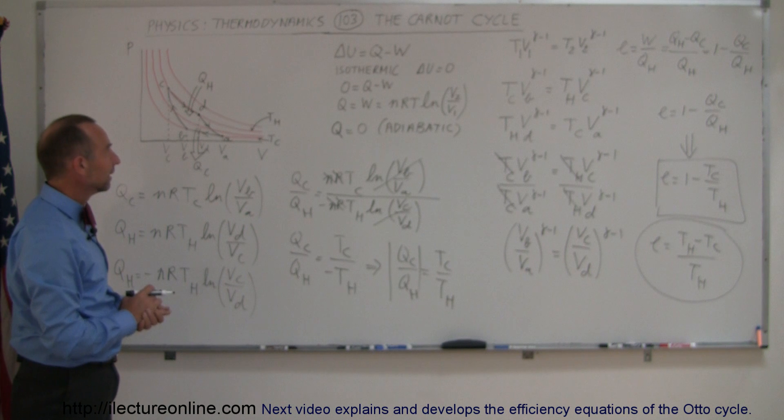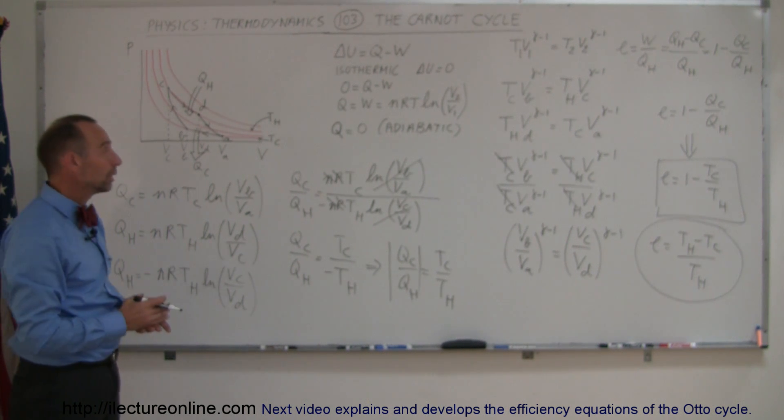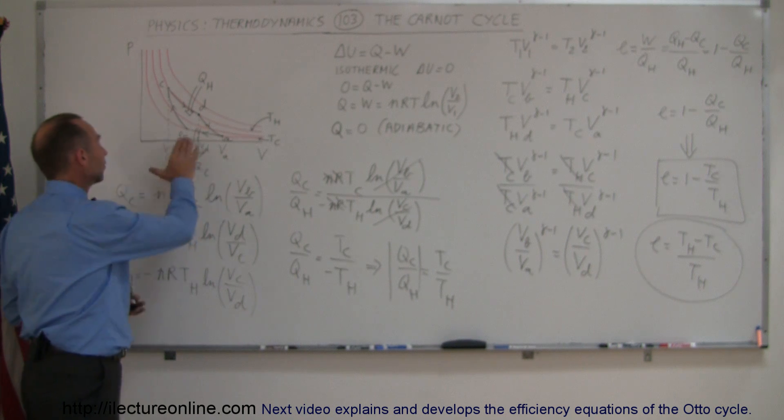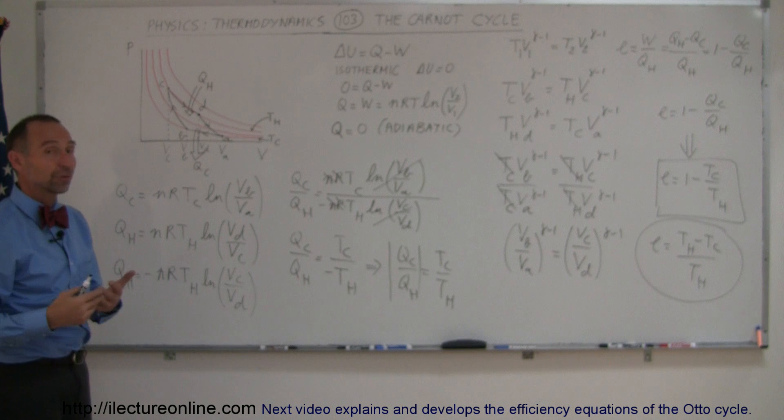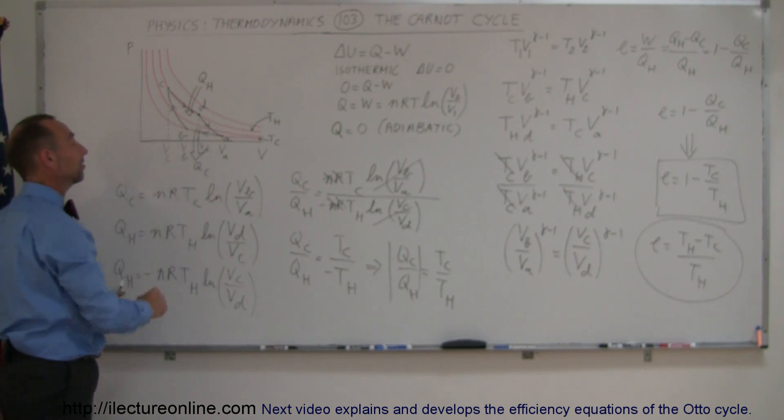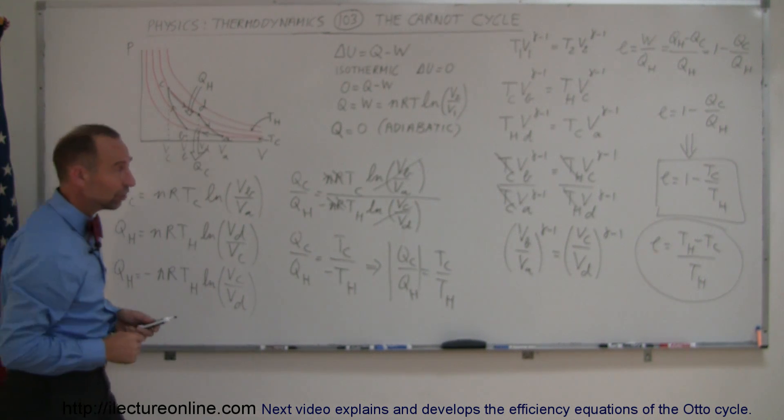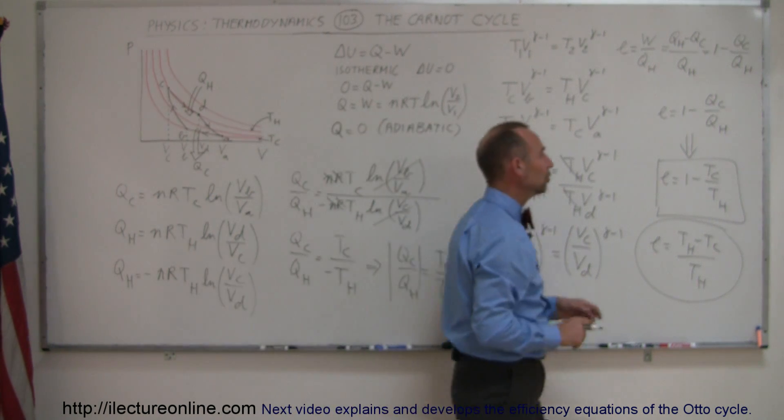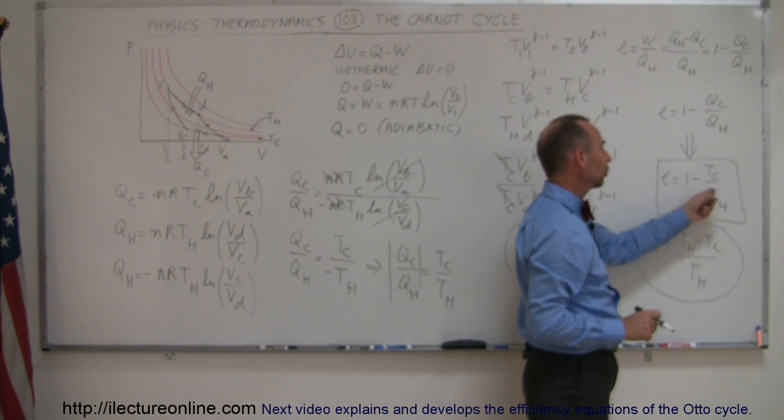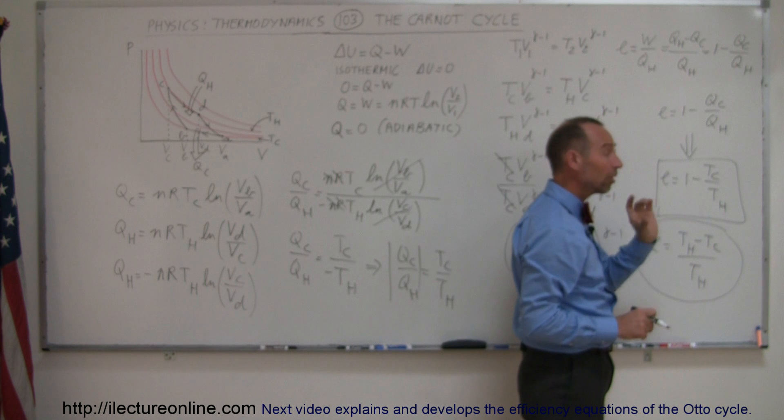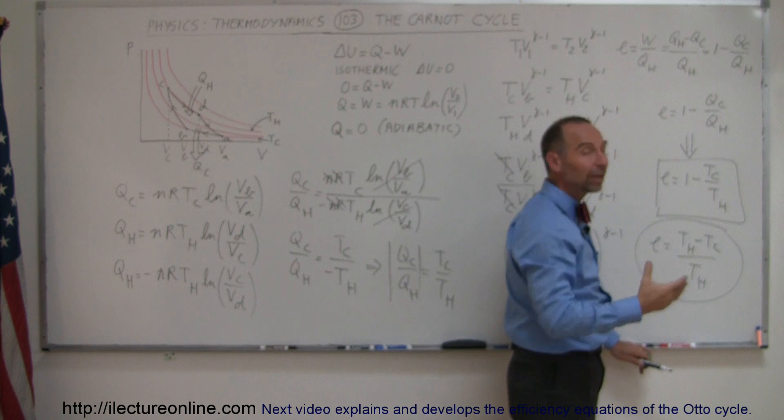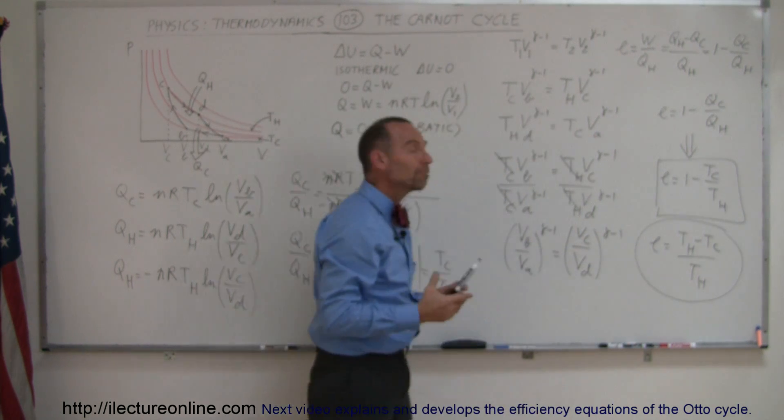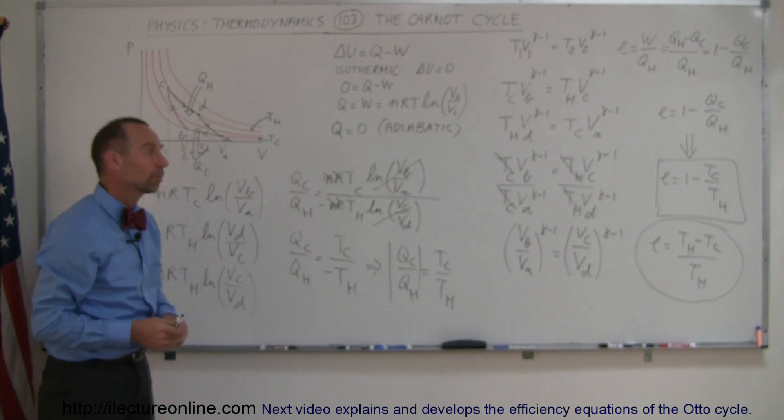So that was pretty neat that Carnot came up with this concept, that there's no engine with any greater efficiency than this engine right here. Of course, not a real engine, theoretical engine, but at least for engineers, they know that they can never exceed this, and if they want to make an engine more efficient, they can do that by making this relationship as small as possible, meaning make T_cold as small as possible, and make T_hot as big as possible. They get the greatest maximum efficiency an engine can produce.